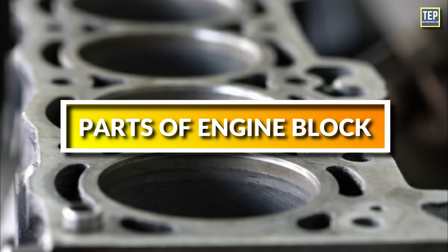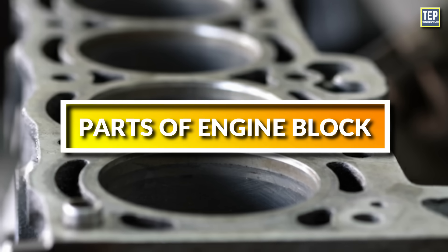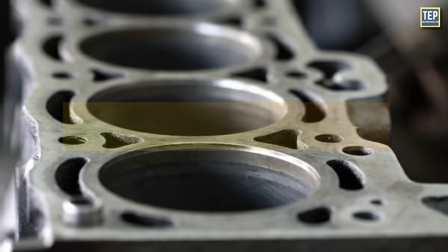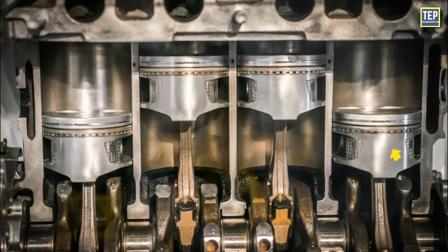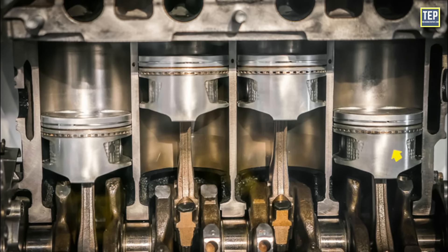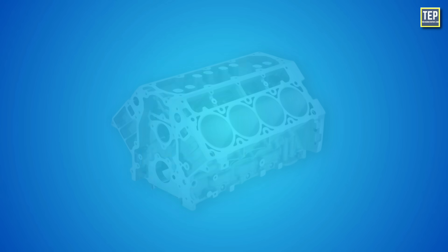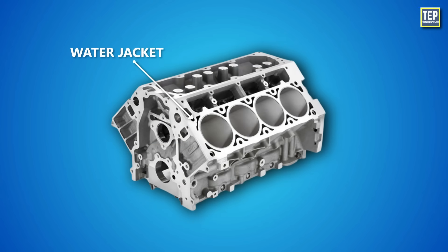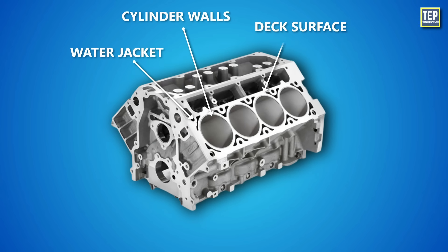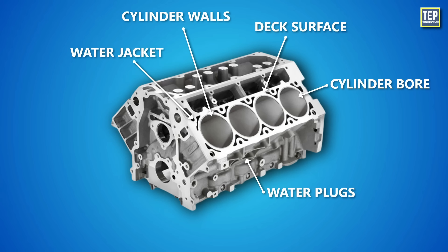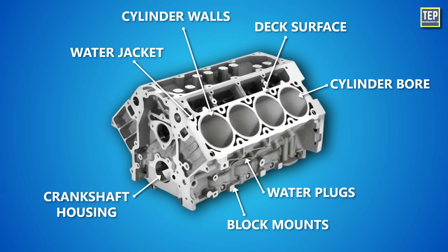Parts of the engine block: The main part of the engine block is the cylinder — the space in which a piston travels. Other parts include the water jacket, cylinder walls, deck surface, cylinder bore, water plugs, block mounts, crankshaft housing, and camshaft housing.